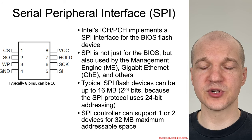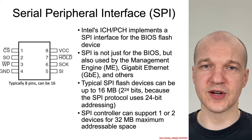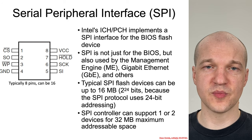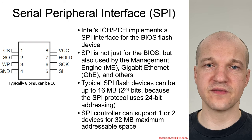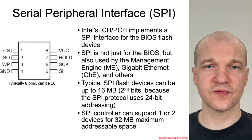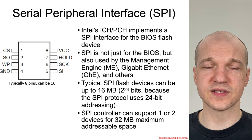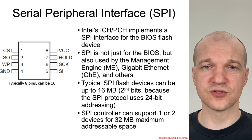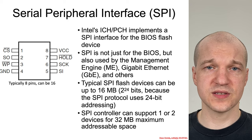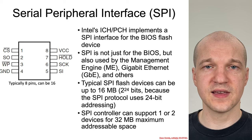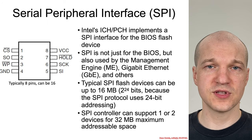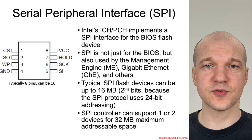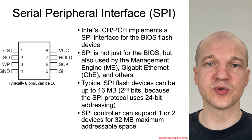SPI can actually be used for arbitrary communication between peripherals, but we care about accessing the flash. On modern systems, the SPI Flash chip is not only used to store the firmware for the BIOS proper, which runs from the reset vector of the CPU — it's also used to store information for peripheral processors like the Intel Management Engine, the Intel Integrated Gigabit Ethernet, or embedded controllers on newer systems. Because the SPI protocol uses 24-bit addressing, you only have 2 to the 24 bits to specify the offset inside the SPI Flash chip, meaning there is a 16 megabyte limit for a typical SPI Flash chip.